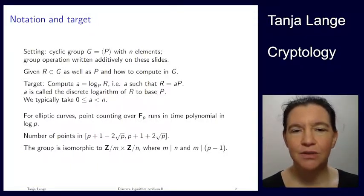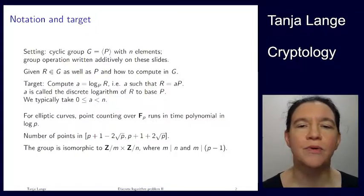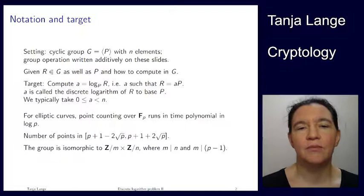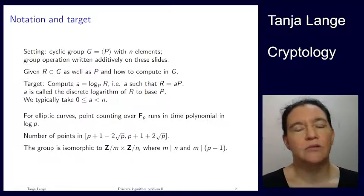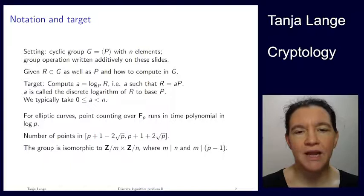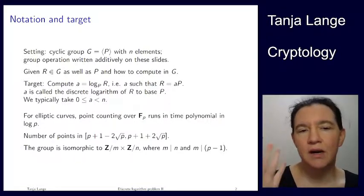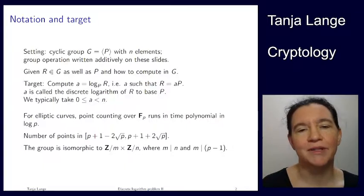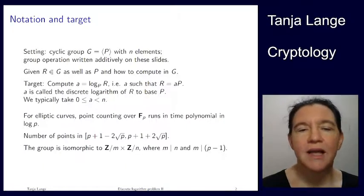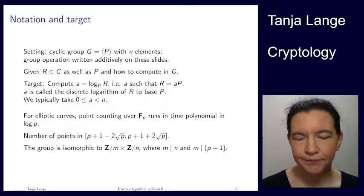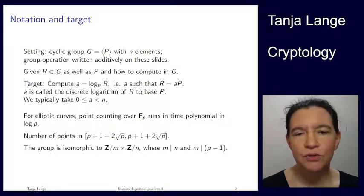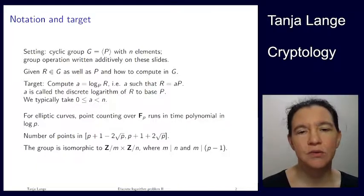So let me set the notation here. We're going to work in some cyclic group generated by some point P with n elements. Because we've been doing a lot of elliptic curve cryptography, I'm talking about an additively written group. We have some target R, which was the P sub A before, but I'm having too many subscripts here, so it's going to be R. We know P, and we now have to compute a in G.